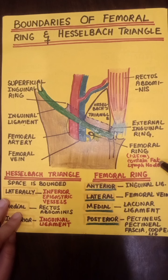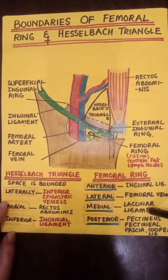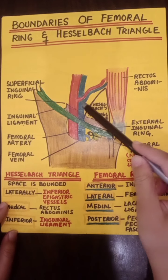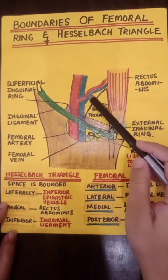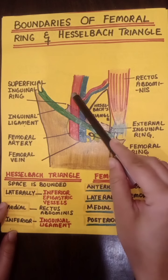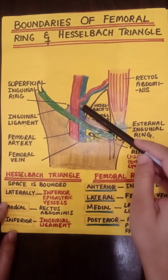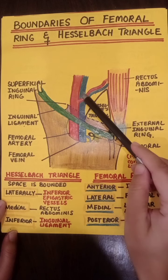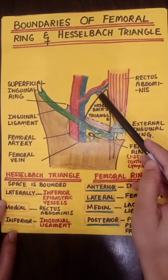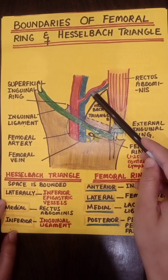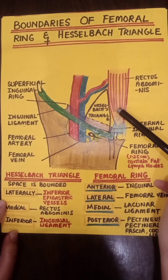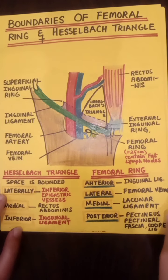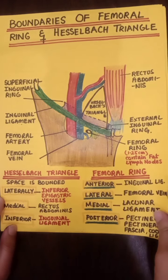The Hesselbach's triangle is the site of direct inguinal hernia. Its boundaries are: laterally the inferior epigastric vessels (a branch of the external iliac artery), medially the rectus abdominis muscle, and inferiorly the inguinal ligament. Keeping this diagram in mind, you will not forget the boundaries.